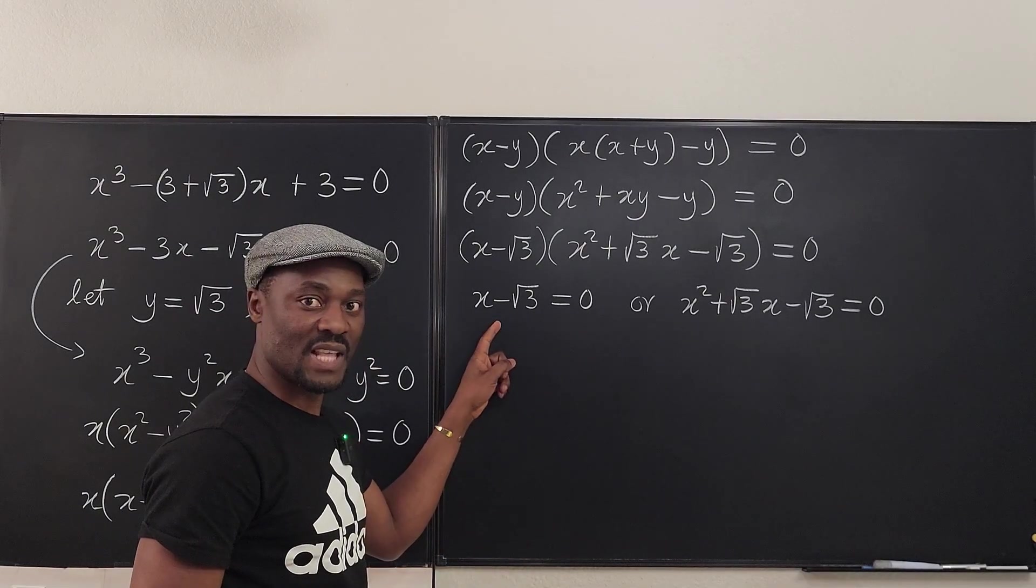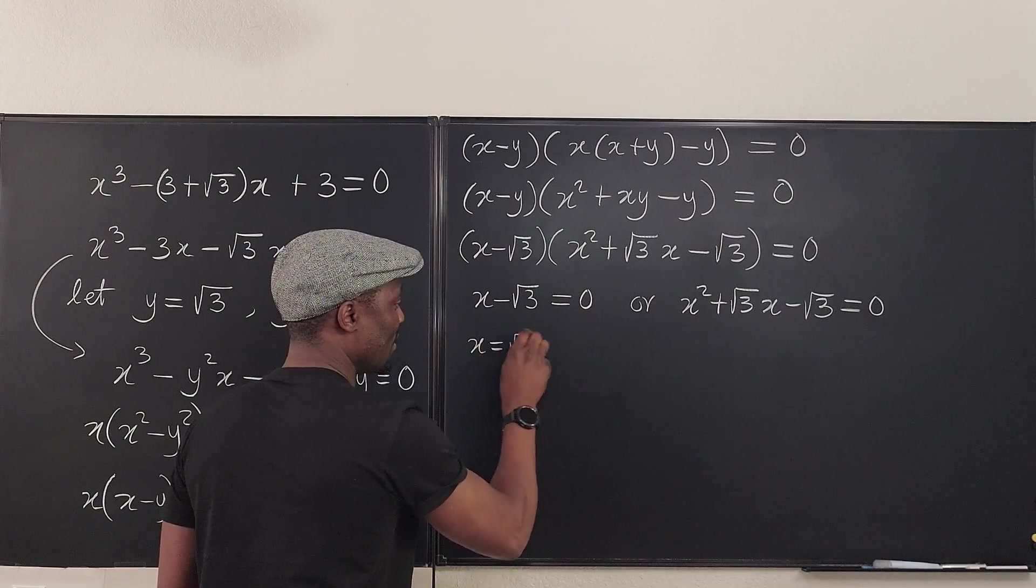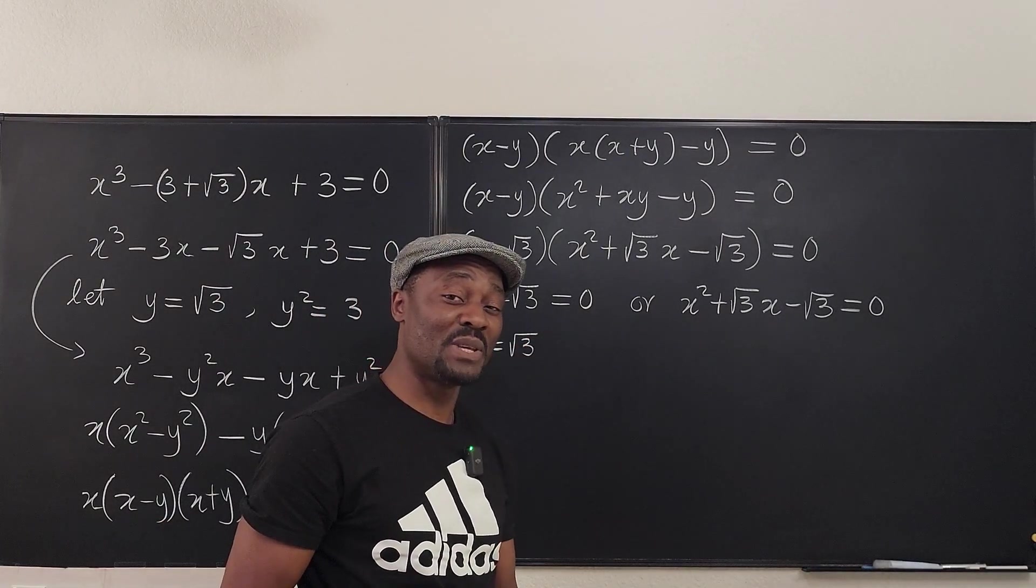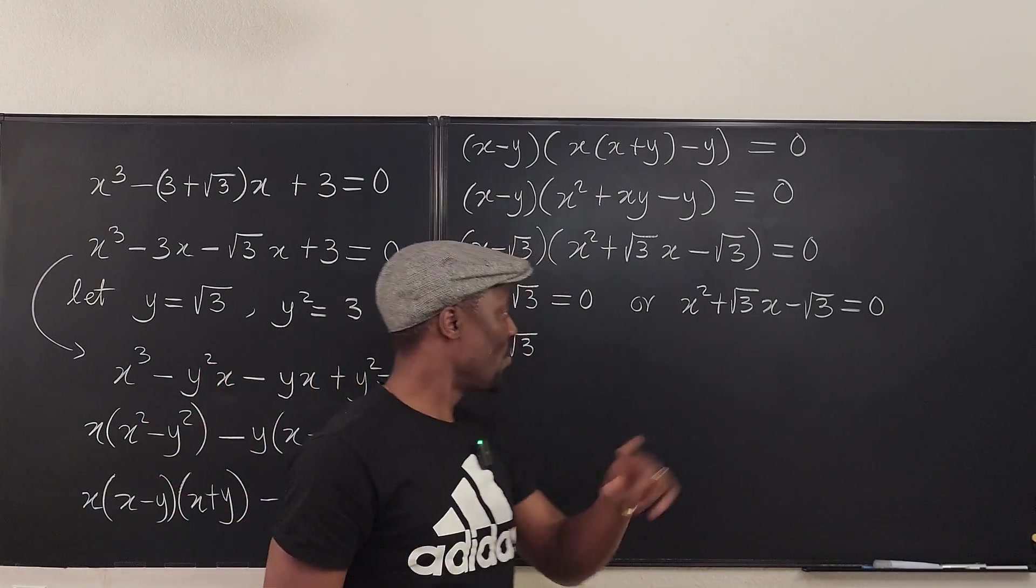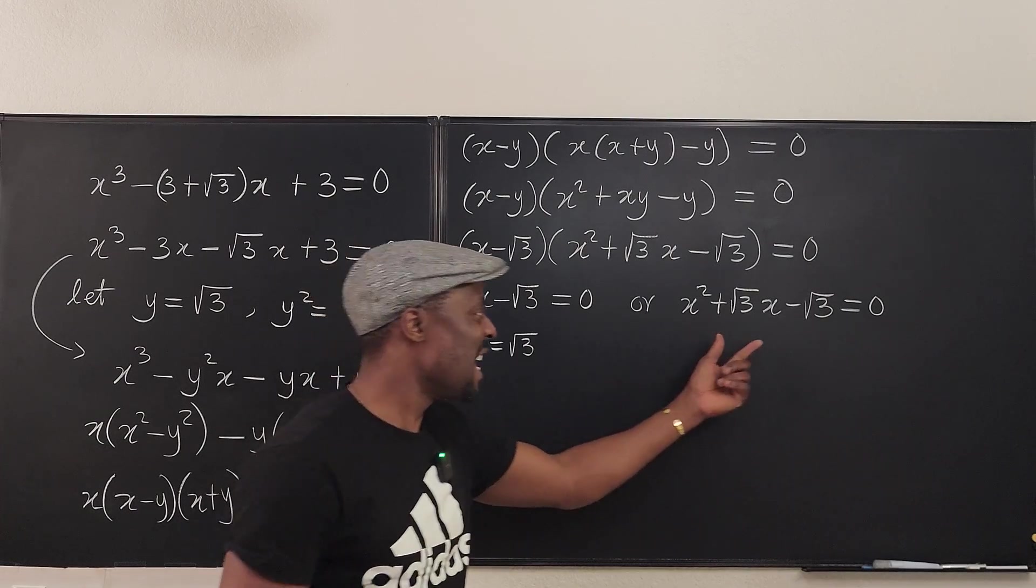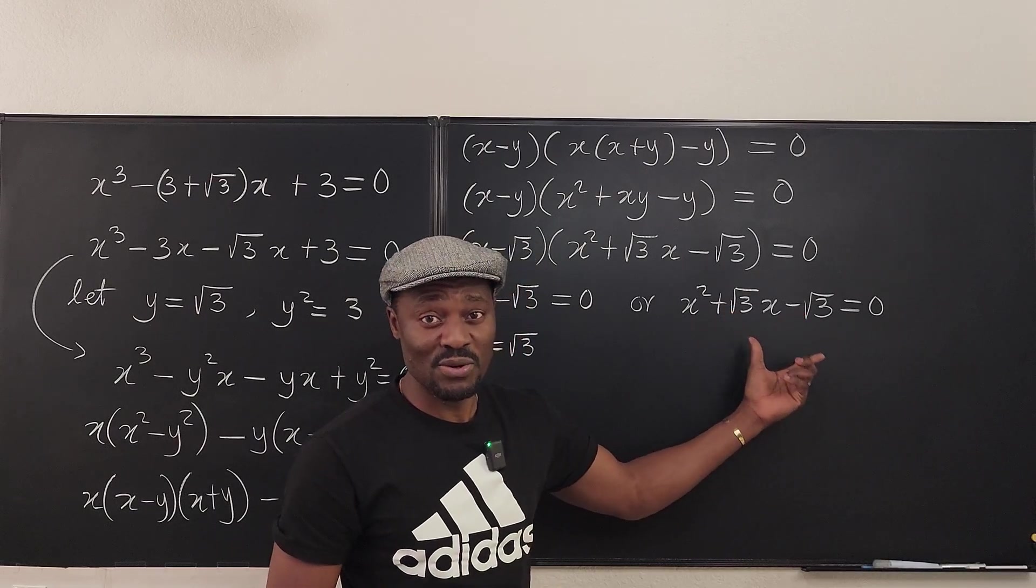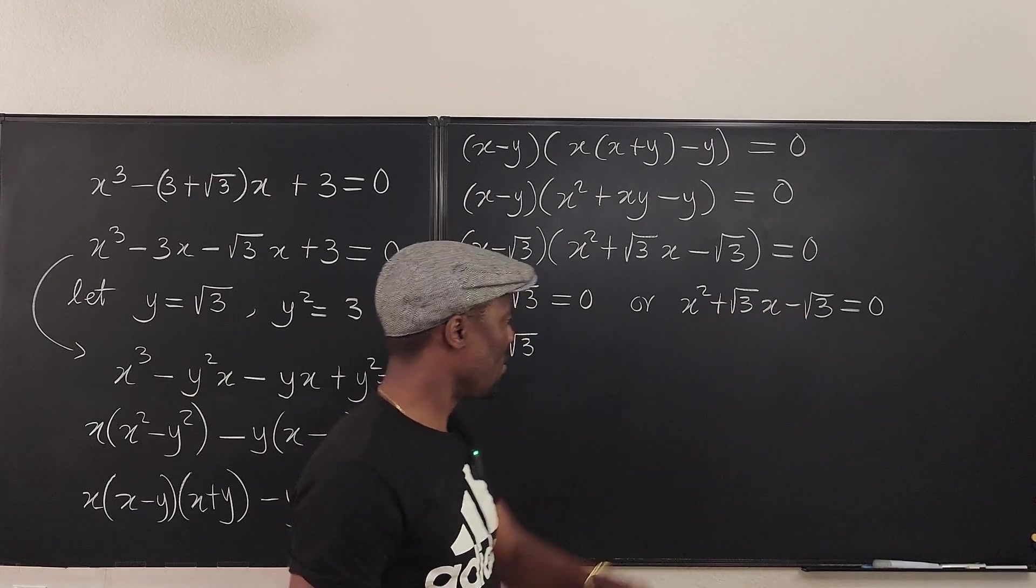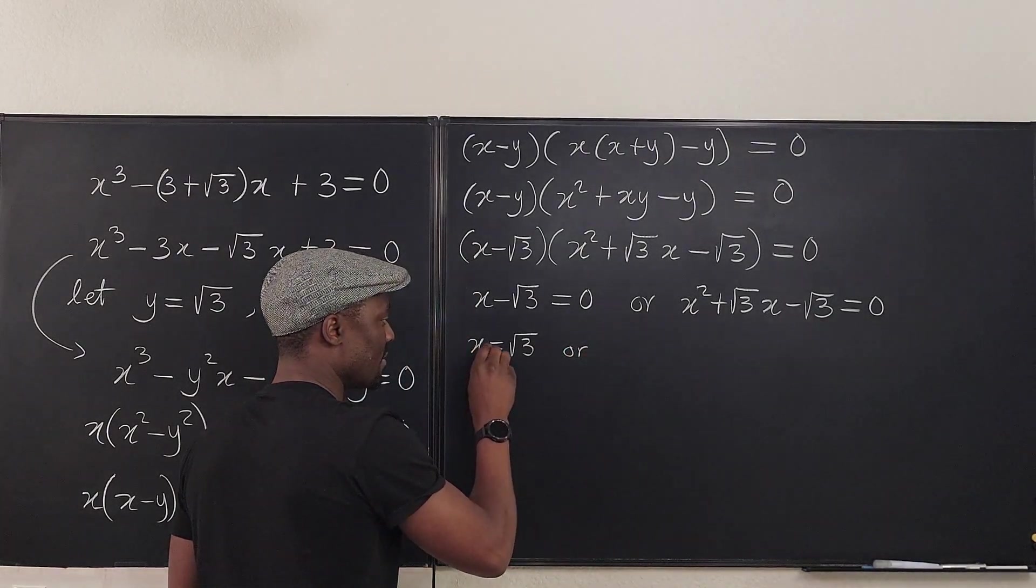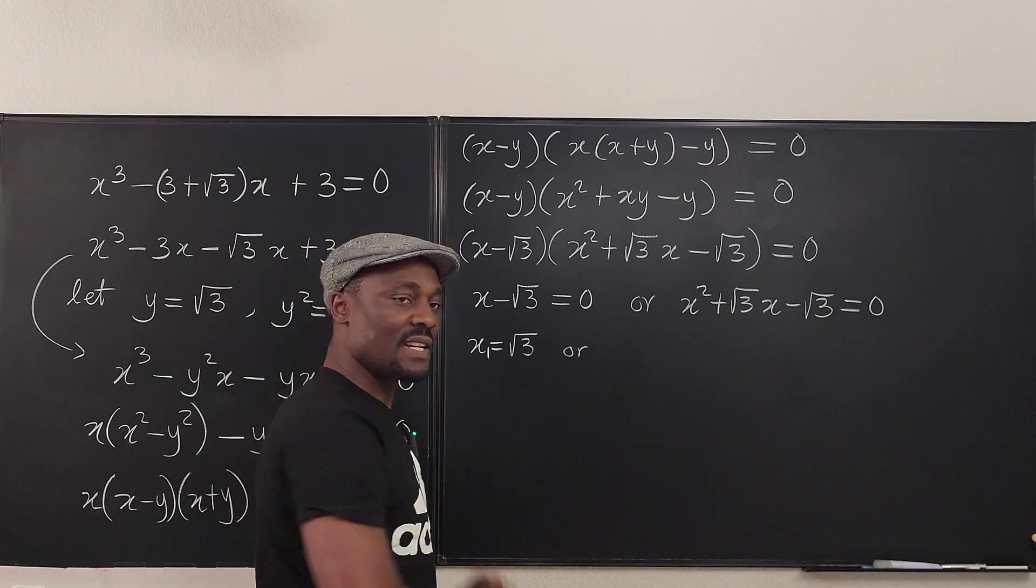This gives us the first answer right away: x = √3. Remember I told you at the beginning we have to get three answers. Well, the two other answers are coming from this quadratic equation even though it has radical or what you call irrational coefficients.